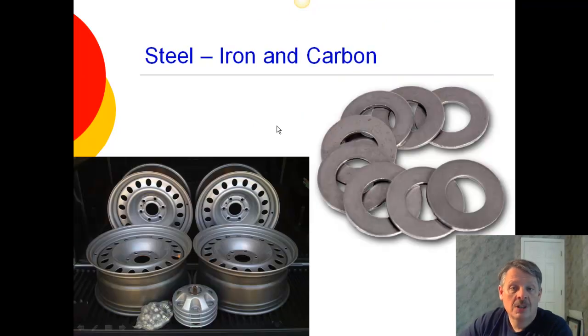Steel. We use steel a lot today. We use it for wire rims of cars, for example, or for washers or bolts or whatever. And it's made out of iron with some carbon thrown in. Now, the problem with steel is it rusts.